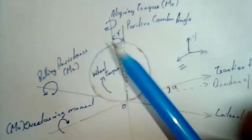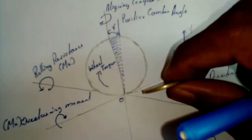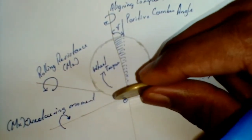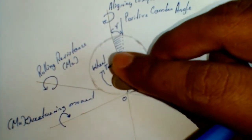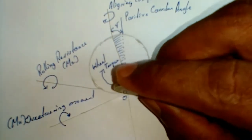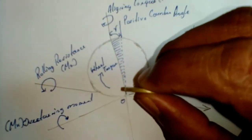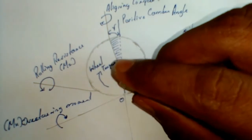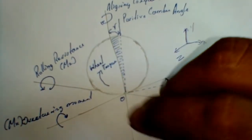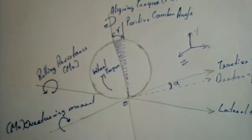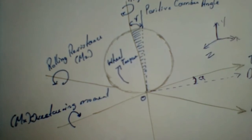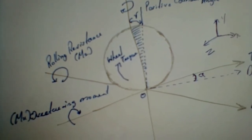The aligning torque helps to retain the position of the tire after steering. There are no external mechanisms for retaining the position of the tire or wheel after steering. These are caused by the camber angle, caster angle, as well as the aligning torque made by the slip angle. These three correspond to the self-aligning torque acting through the Y-axis.